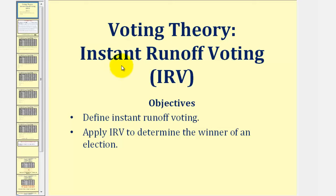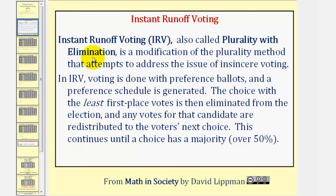Welcome to a lesson on instant runoff voting, abbreviated IRV. In this lesson, we'll define instant runoff voting and also apply it to determine the winner of an election. Instant runoff voting, also called plurality with elimination, is a modification of the plurality method that attempts to address the issue of insincere voting.